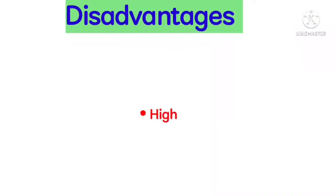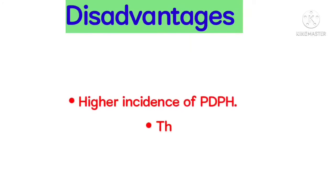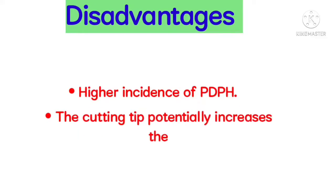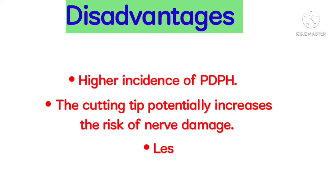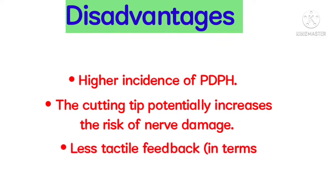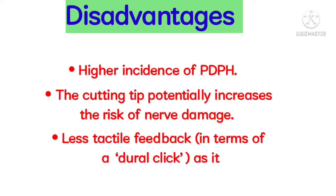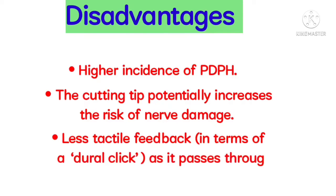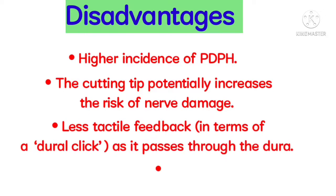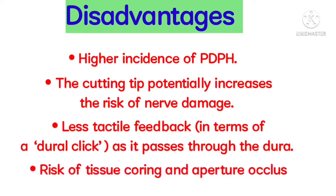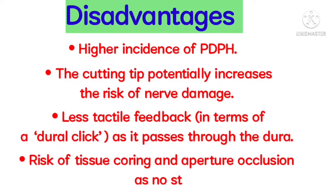Disadvantages of the Quink Needle: Higher incidence of PDPH. The cutting tip potentially increases the risk of nerve damage. Less tactile feedback in terms of a dural click as it passes through the dura. Risk of tissue coring and aperture occlusion as no stylet is used.